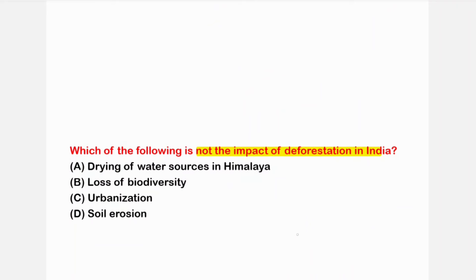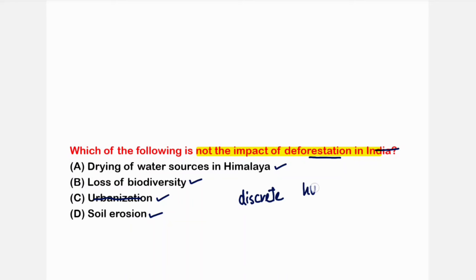The next question: which of the following is not an impact of deforestation in India? Deforestation causes soil erosion, loss of biodiversity, and drying of water resources in the Himalayas. Urbanization — making discrete human settlements — is a cause of deforestation, not a consequence of it.